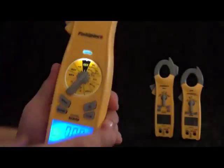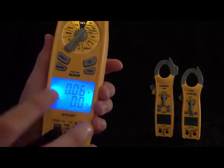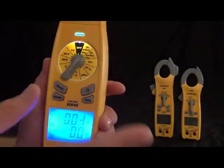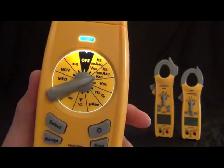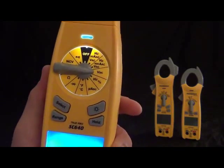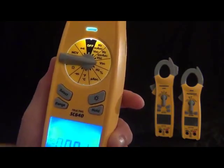And we got volts DC. This is for measuring with the leads. Then we got hertz and duty cycle, and this one's also with the leads. So when you need frequency or duty cycle, it'll show them both at the same time on the dual display.